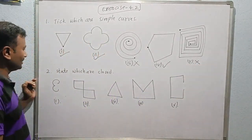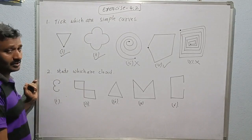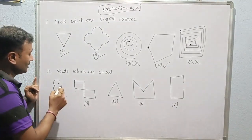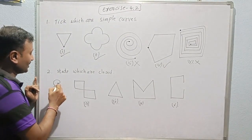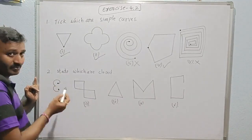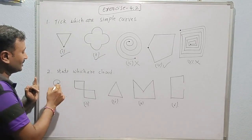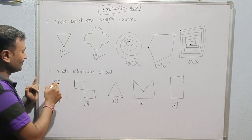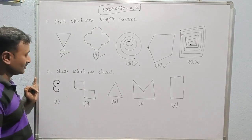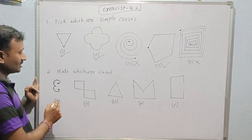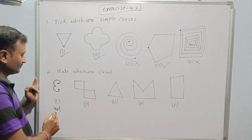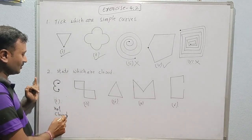Now let us discuss the second part: which are closed? What is our condition? Closed means the starting point and ending point should meet and be the same. Whenever we draw through this border, they are not meeting, that is why this is not closed. We will write 'not closed.'